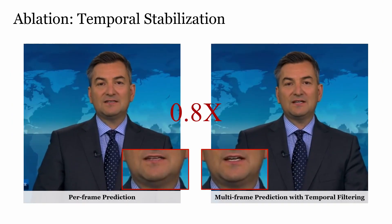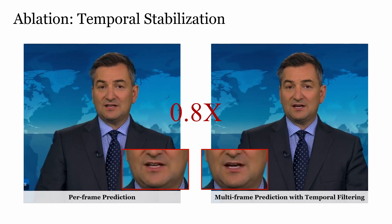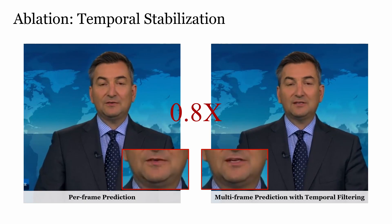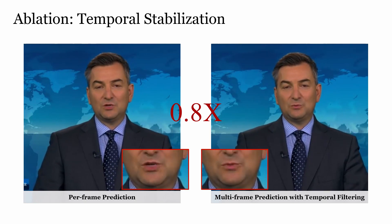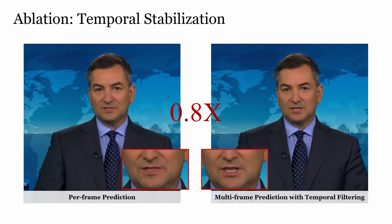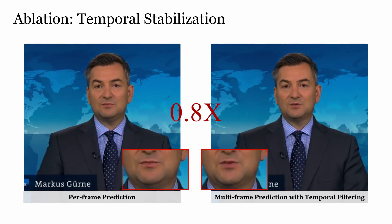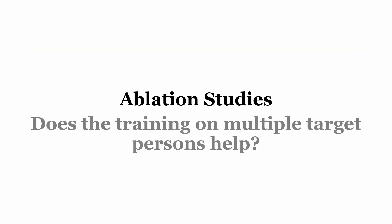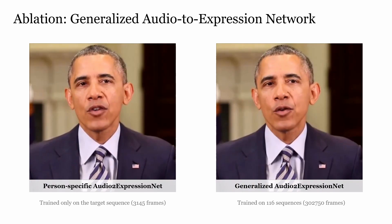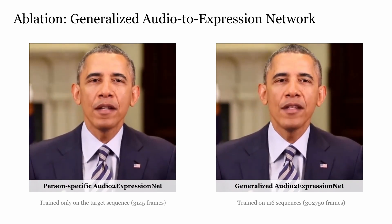That rain will gradually sink its way slowly southward into the far north of England, northwest of Wales. Some clear skies, though developing in Scotland. Temperatures overnight, 8 to 12 degrees Celsius. Training jointly on multiple persons improves the reenactment quality.